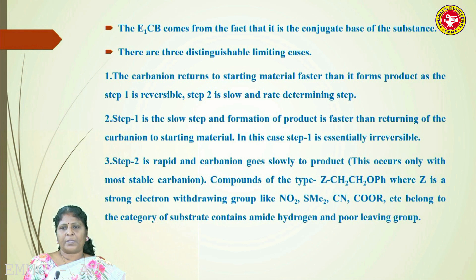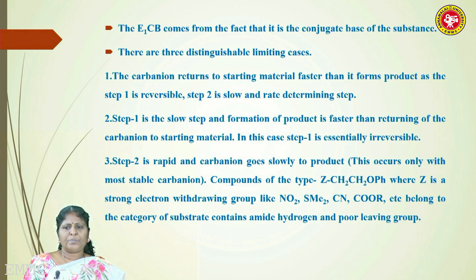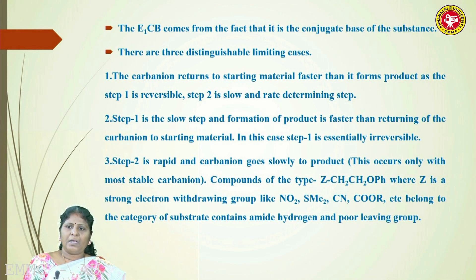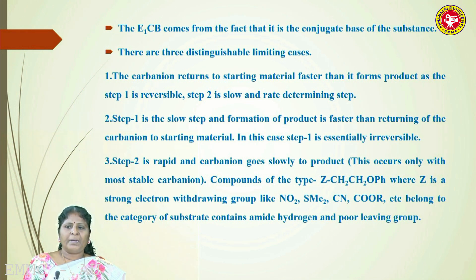The E1cb mechanism has three distinguishable limiting cases. Case 1: the carbanion returns to the starting material faster than it forms the product — step 1 is reversible and step 2 is slow and rate-determining. Case 2: step 1 is the slow step and formation of product is faster than return of the carbanion — step 1 is essentially irreversible. Case 3: step 2 is rapid and the carbanion goes slowly into the product — possible only when the substrate bears electron-withdrawing groups like NO₂, dimethyl sulfide, cyano, or ester, or when the substrate contains amide hydrogen and a poor leaving group.